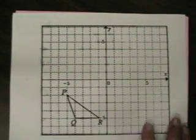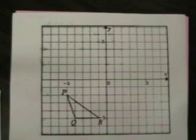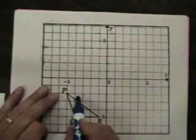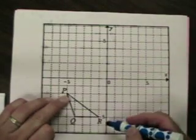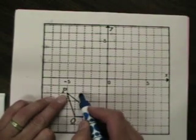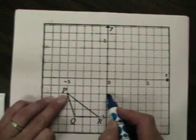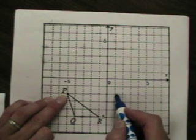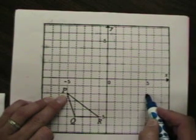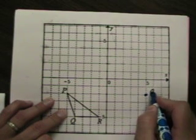It says to take the figure PQR, and it wants us to reflect, let's see, reflect PQR across the y-axis and label the new image P' Q' and R'. So I'm going across the y-axis. So let's go ahead and do that. I'm going to try not to draw, but here's the y-axis. P is 1, 2, 3, 4, 5 from the y-axis. So I'm going to go 1, 2, 3, 4, 5. That's going to be P'.